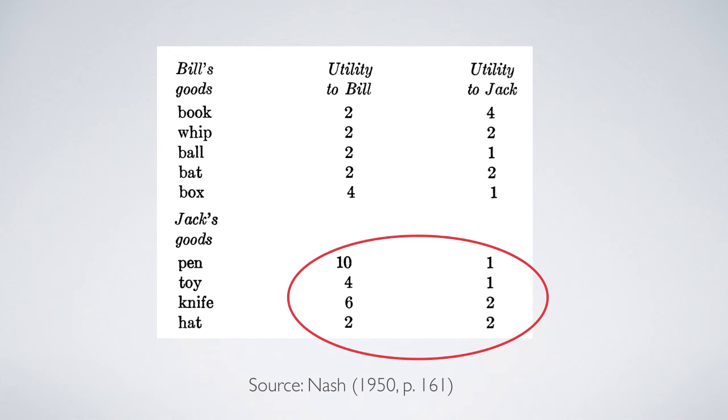Jack has four other goods, and their utility levels to the two are listed in the lower part of this table.